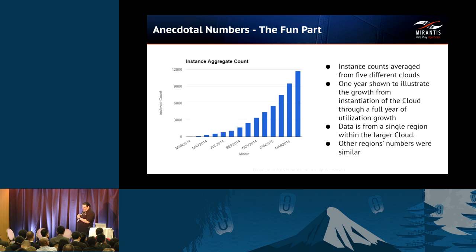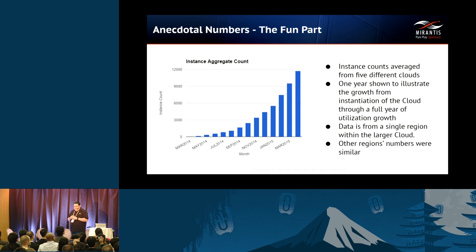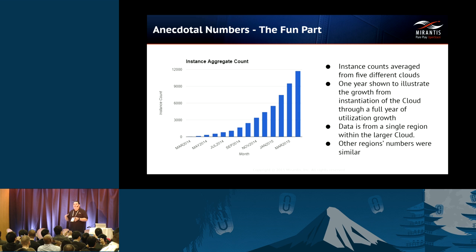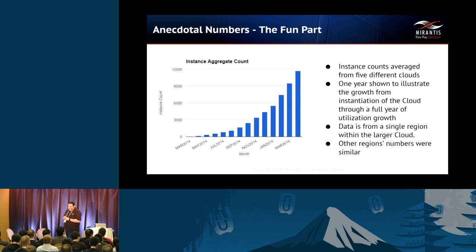Here's the first of some anecdotal numbers. I took a snapshot from March 2014 to March 2015, representative of our customers' clouds. I've averaged the counts across five different clouds — the numbers are very similar across them and their workloads. It gives you a picture of one year of utilization growth from end to end, which is big. Most of the time you see snapshots of weeks or months, but this gives you a full year to year end.